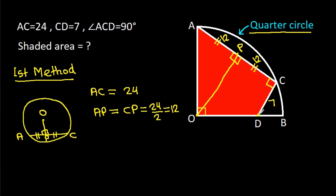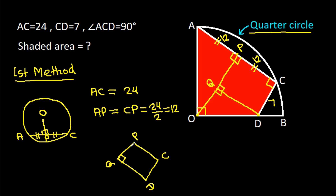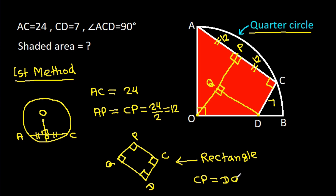Now, from point D, if we draw a perpendicular on OP — suppose this point is Q — then in quadrilateral CDQP, all four angles are 90 degrees. So it will be a rectangle. Therefore, CP will be equal to DQ, that will be 12, and CD will be equal to PQ, that will be 7.